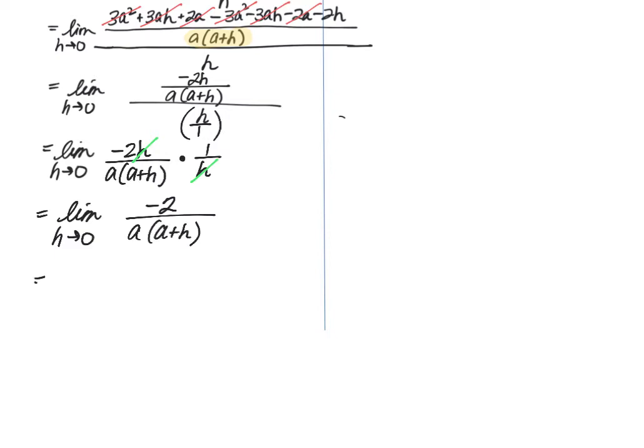So we get the limit as h approaches 0 of negative 2 over a times a plus h. At this point, we can do direct substitution. Remember that you are substituting in 0 in place of h. So this is where we would drop the limit notation because we're evaluating the limit at this point. So negative 2 over a times a plus 0, which is going to leave us with negative 2 over a squared. Whew!